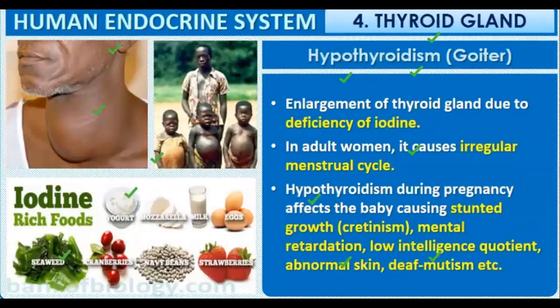Next are the diseases related to improper functioning of the thyroid gland. The first disease is hypothyroidism, also known as goiter. In goiter, there is enlargement of the thyroid gland due to deficiency of iodine.